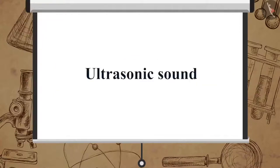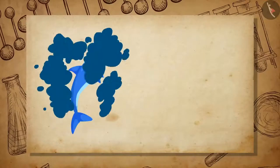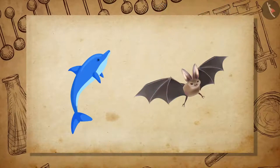Now, let us learn about ultrasonic sound. Sounds of frequencies above 20 kHz is called ultrasonic sound or ultrasound. Ultrasonic sounds are produced by animals like dolphins and bats.